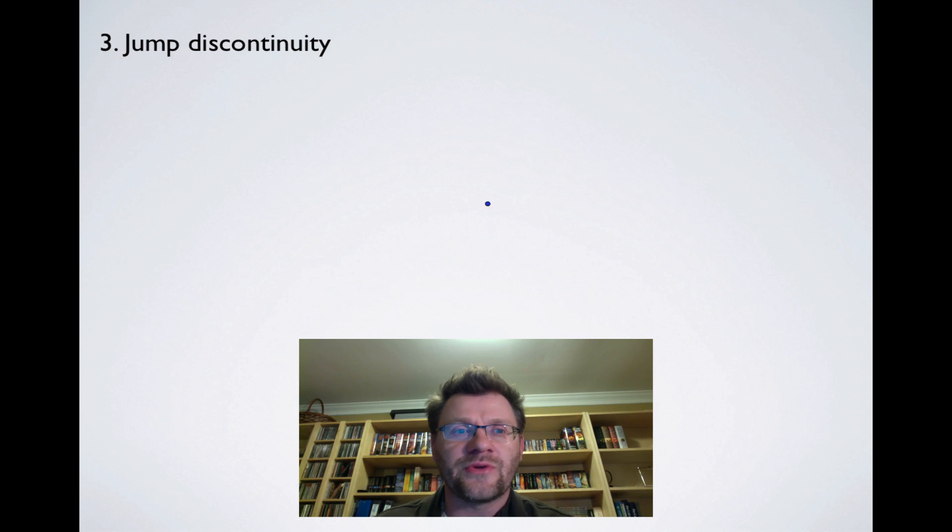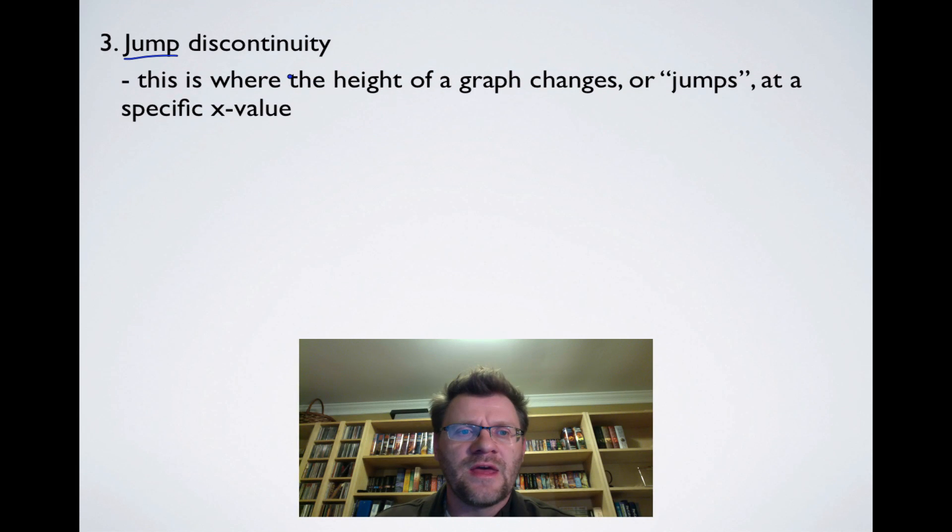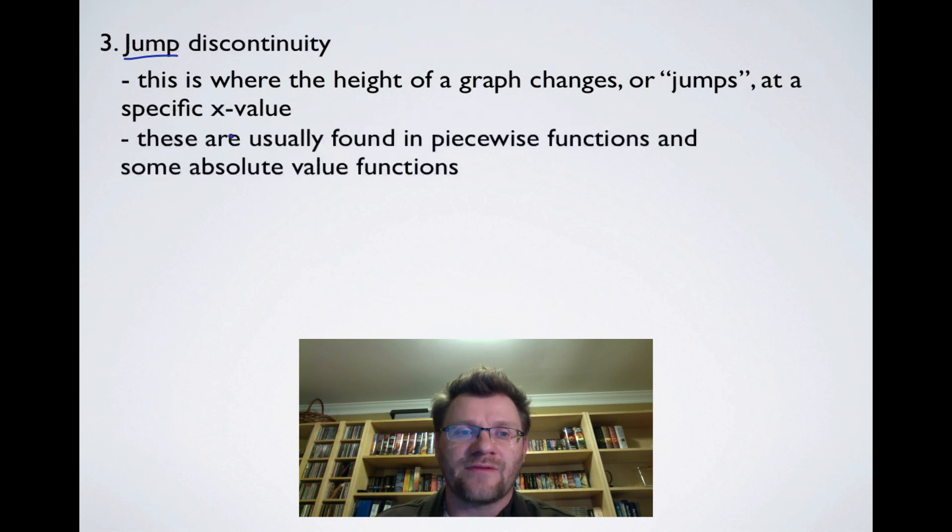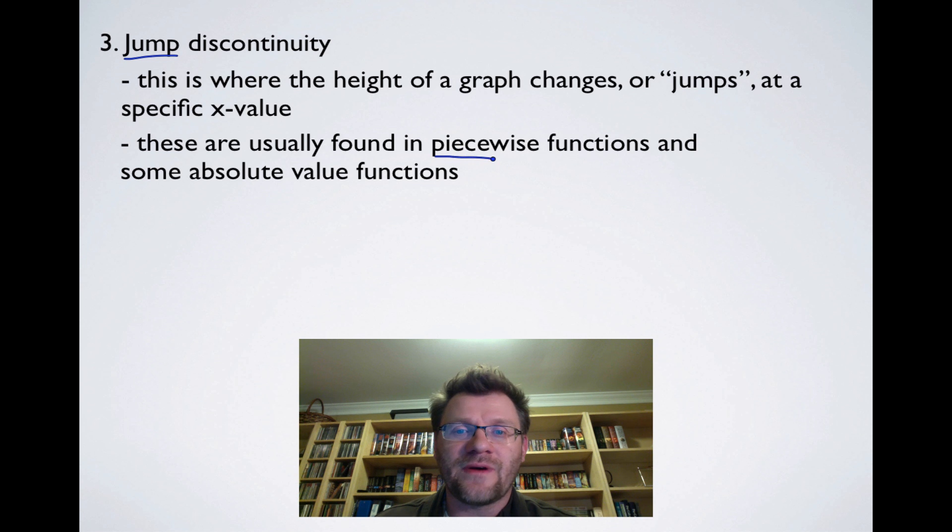So our final type of discontinuity is called the jump discontinuity. And this is where the height of a graph changes or jumps at a specific x value. And these are usually found in piecewise functions and absolute value functions. And you've actually seen one of these as an example yesterday.